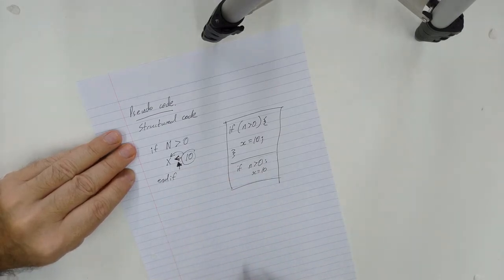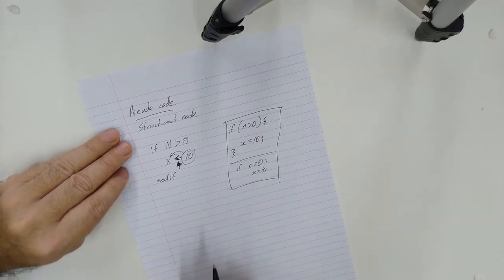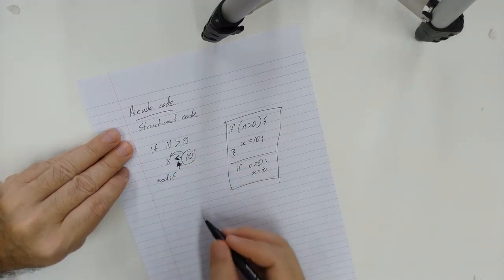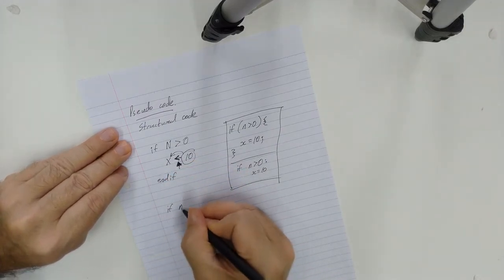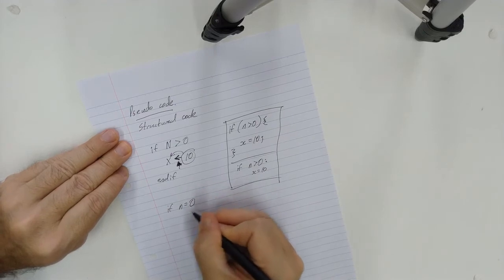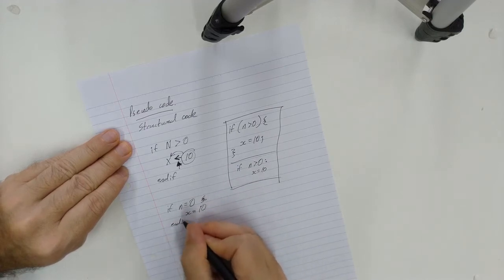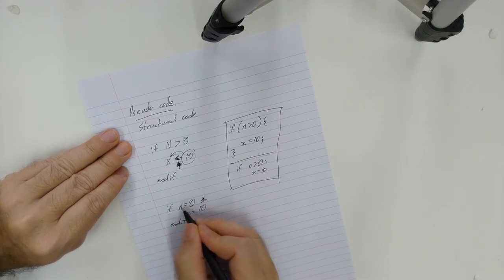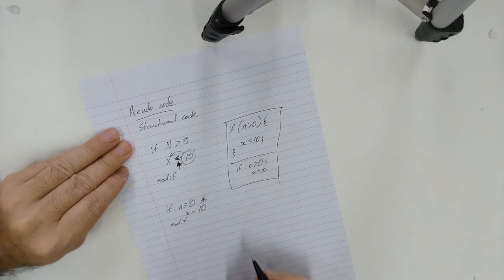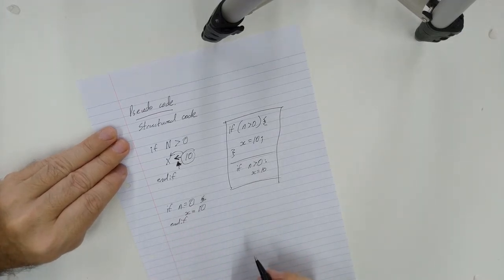Because different languages differentiate between assignment and comparison in different ways. Just to illustrate, if I said if N is equal to zero, and then said X is equal to 10, end if—I'm using the same symbol to mean, to compare N to zero and then to assign 10 to X. That is not unambiguous; that is ambiguous, and you want pseudocode to be as clear as possible.